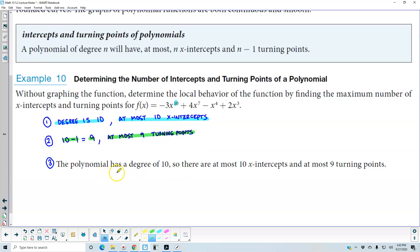So the polynomial has a degree of 10, so there are at most 10 x-intercepts and at most 9 turning points.